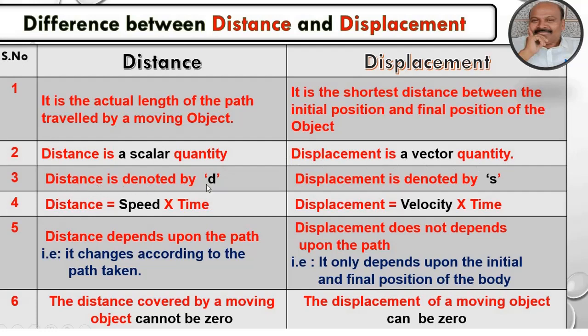Distance is denoted by D. Displacement is denoted by S. Distance equals speed times time. Displacement equals velocity times time.